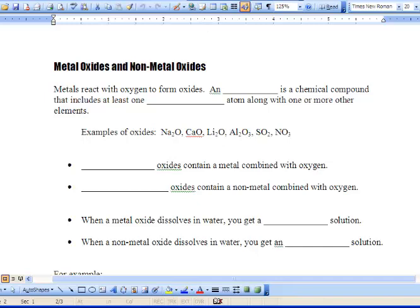Now what we're going to be talking about is metal oxides and non-metal oxides. Metals react with oxygen to form oxides, and an oxide is a chemical compound that contains at least one oxygen atom along with one or more other elements. So let's check this out. We've got Na2O or sodium oxide, calcium oxide, lithium oxide, aluminum oxide, sulfur oxide, and then nitrogen oxide.